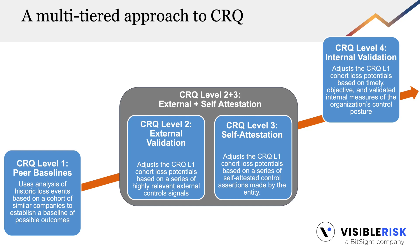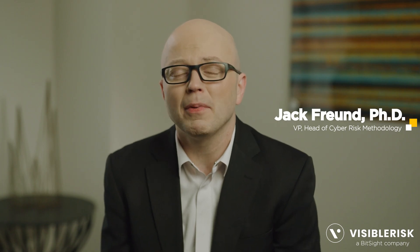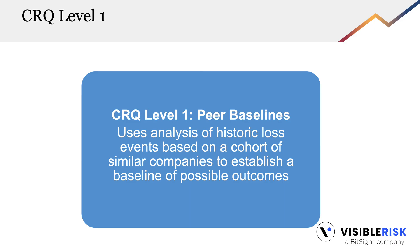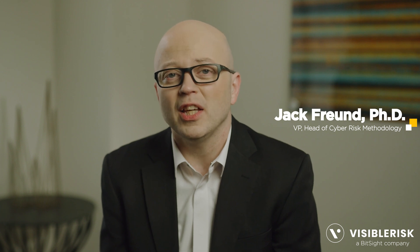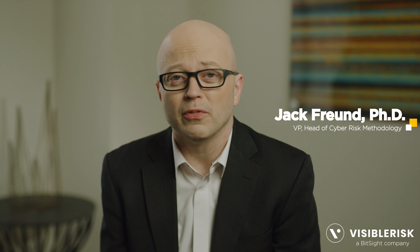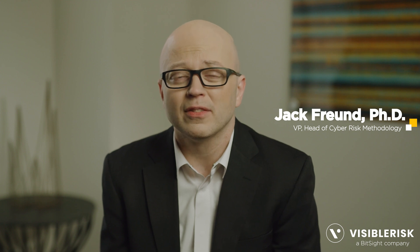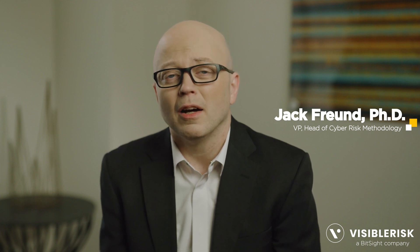What we've done at Visible Risk is divide the landscape of CRQ into four levels. These are not necessarily hierarchical levels, but they help describe the type of things an organization can do when building CRQ solutions. CRQ level one, or what we call the peer baseline, is the foundation of all of these things. It brings to bear a set of industry datasets that allow you to see what your organization looks like in terms of loss potential and frequency of loss against a broader landscape of peer cohorts that have experienced similar losses to you.